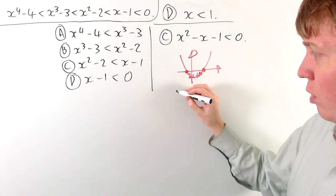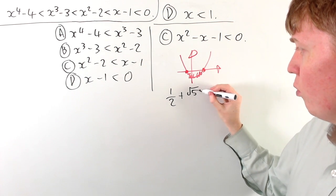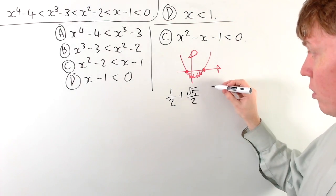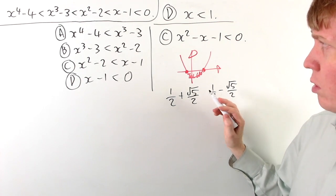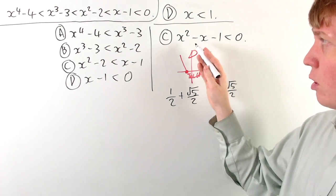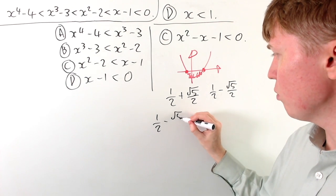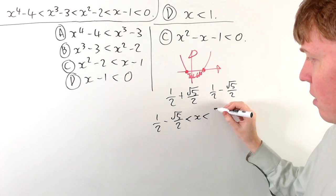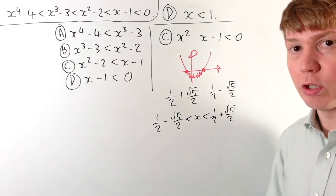Solving with the quadratic formula, we find that our two roots are one half plus root 5 over 2 — the golden ratio — and one half minus root 5 over 2. So x has to be between these two roots for the quadratic to be less than 0, giving us: one half minus root 5 over 2 is less than x, which is less than one half plus root 5 over 2.